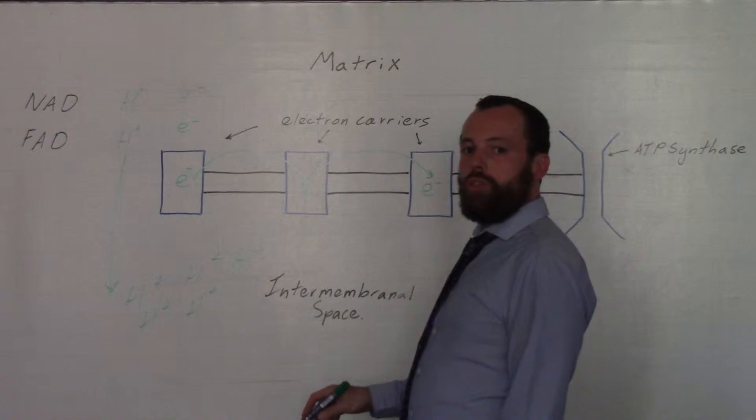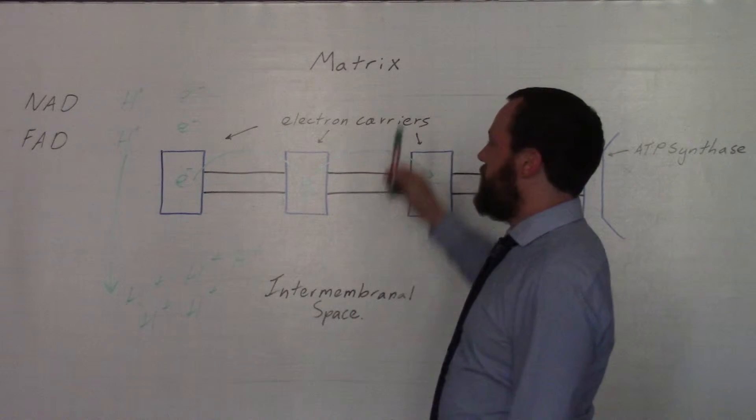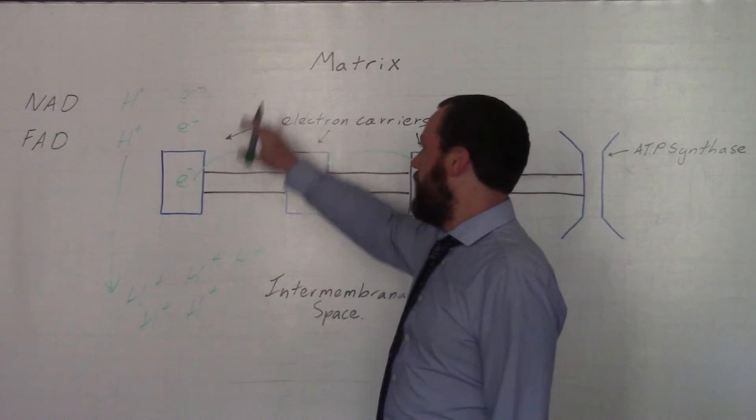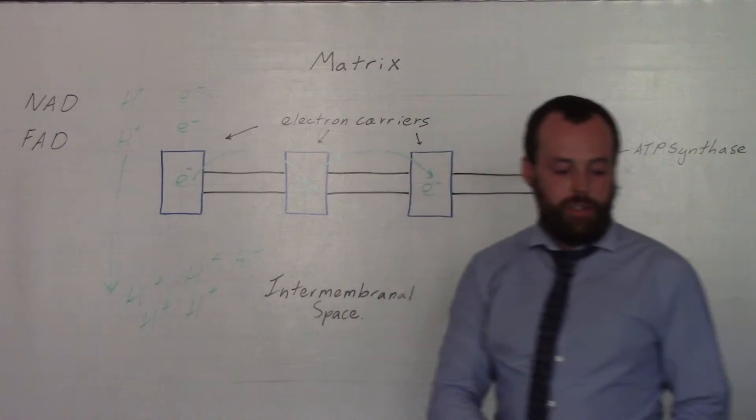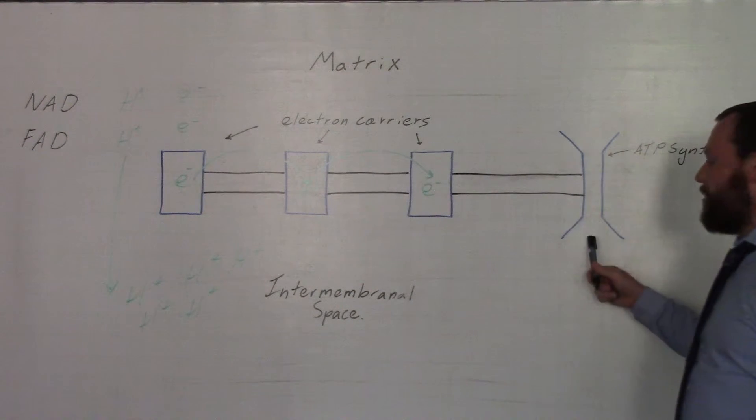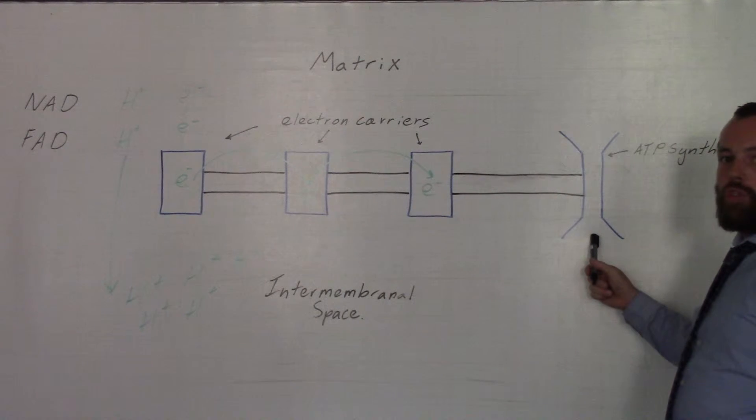The H+ ions want to move from a high concentration back into the matrix, following the electrochemical gradient, following this concentration gradient from high to low. They do that by moving through the specialist protein, this enzyme, at the end of the electron transport chain.